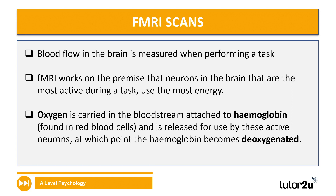Let's take a look now at fMRI scans. fMRI scans measure the blood flow in the brain, measured when participants or patients are asked to perform a specific task. The fMRI machine works on the premise that neurons that are active in the brain are most active during the task because they're using the most energy. Oxygen is carried in the bloodstream, attached to haemoglobin found in red blood cells, and it is released for use by these active neurons, at which point the haemoglobin becomes deoxygenated.